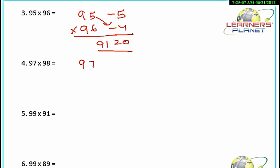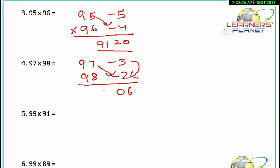Similarly, 97 into 98. It is minus 3 from 100 and minus 2 from 100. Now 3 twos are 6, but since we are taking the base as 100 with two zeros, we must fill up two digits. So we write 06. With the cross subtraction, 97 minus 2 gives 95. So the whole answer is 9506.